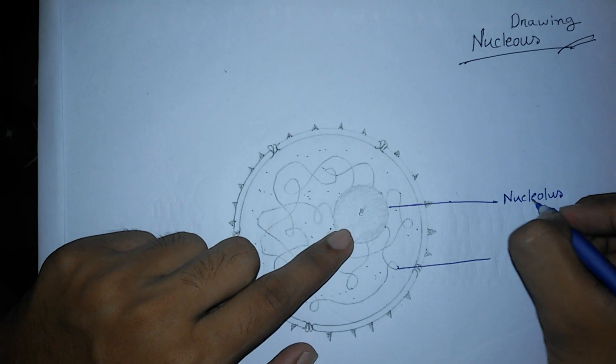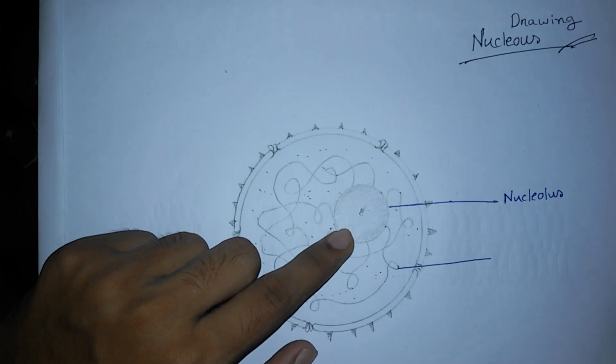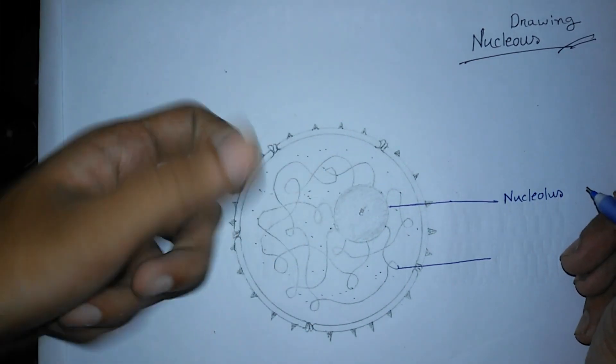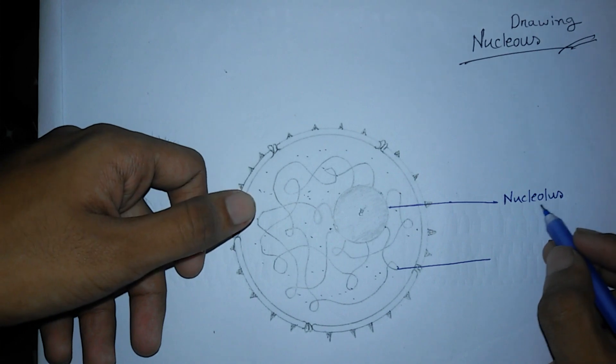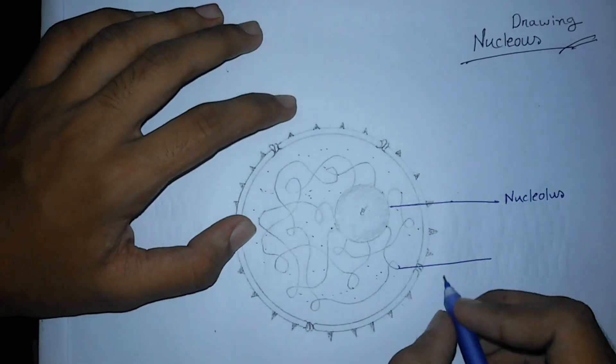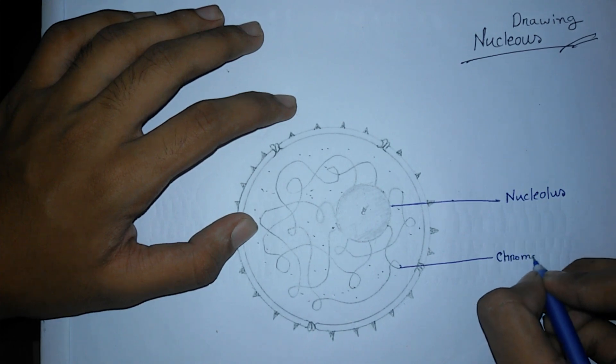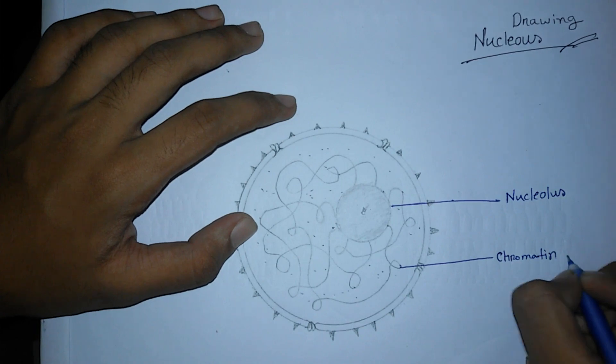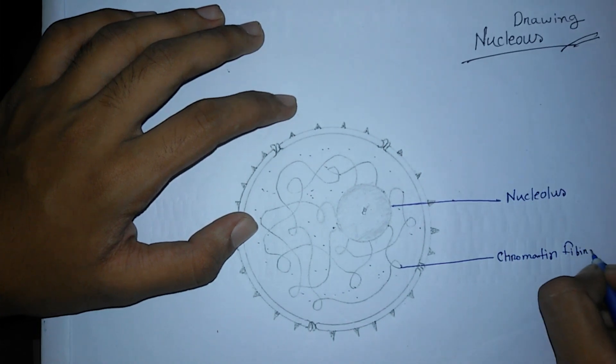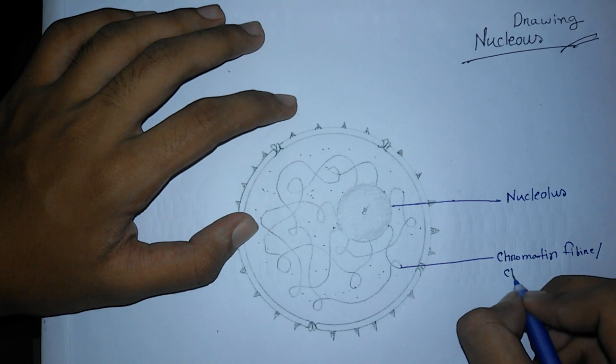Nuclear means nuclei and 'olus' means like cubic-shaped. That's why it's called nucleolus. And this is chromatin fiber, or this is called chromosome.